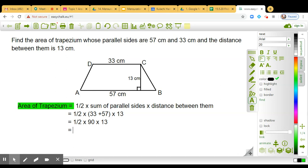Very good, 45 into 13 which comes out to be, what is the final answer? 585 square centimeter. So we write it as square centimeter. Good job.